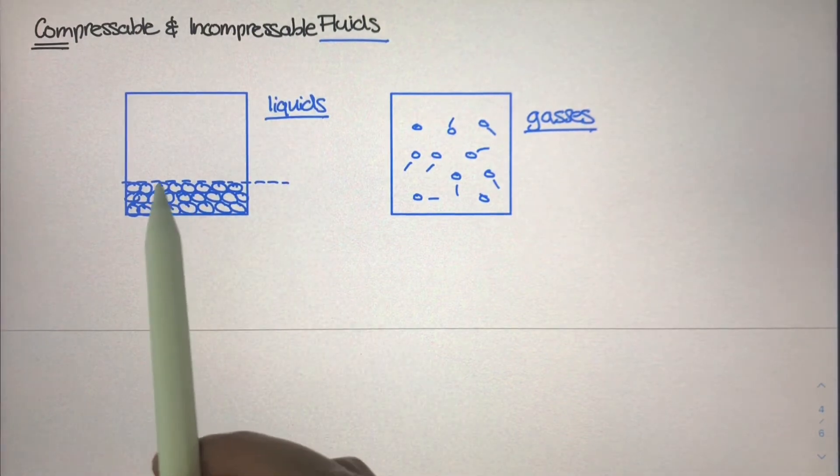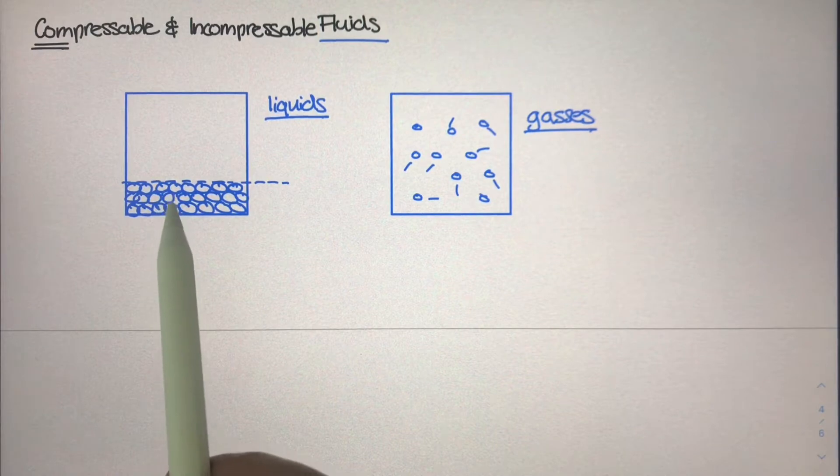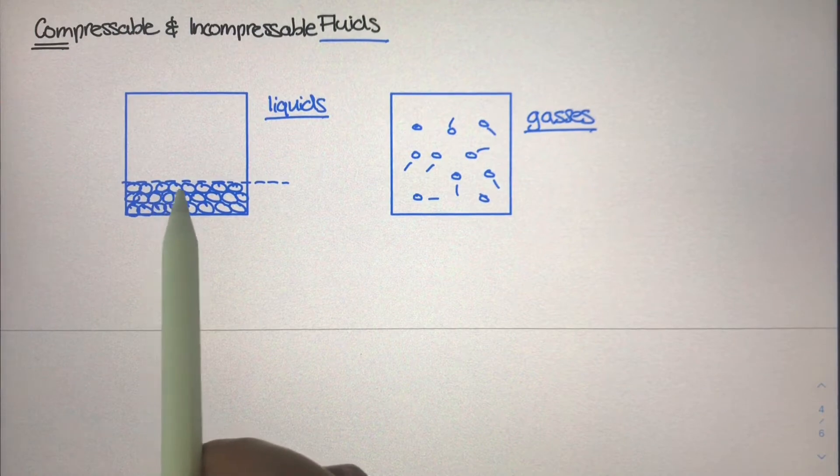These liquid molecules cannot be compressed any further because the space between them is already so small. And that space being small is because the molecular bonds between the molecules are strong.